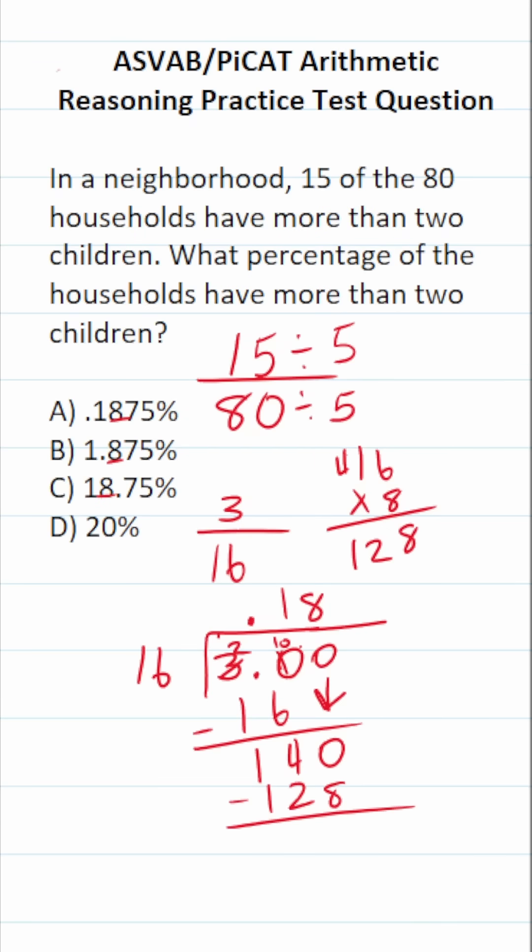Let's do this subtraction here. We can't do 0 minus 8, we have to borrow. This becomes 3, this becomes 10. 10 minus 8 is 2. 3 minus 2 is 1. 1 minus 1 is 0. And again, we have a 0 here that we can drop down.